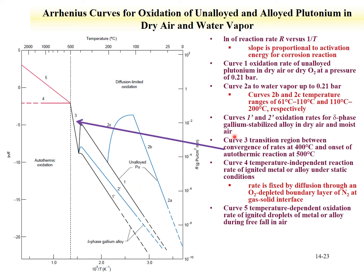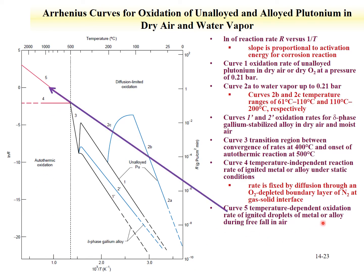At higher temperatures there is a transition to an autothermic reaction. Rates increase significantly at higher temperatures. In one regime a temperature-independent rate is observed for burning metal or alloys under static conditions. In experiments with freely falling droplets of burning metal or alloy, the rate actually increases with temperature. The overall data demonstrate the role of water in oxidation and the fact that alloys are less susceptible to oxidation than pure plutonium metal.